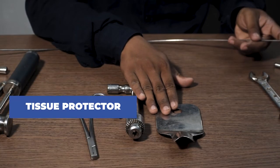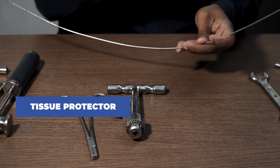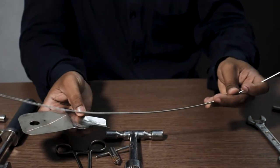This device is called a tissue protector. Now during the process of reaming, this device is used to protect the soft tissues during the reaming.